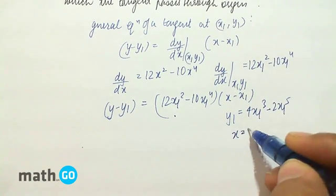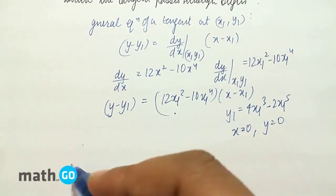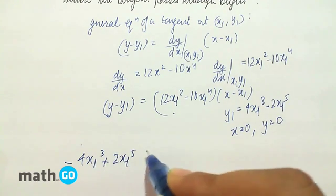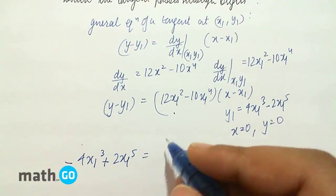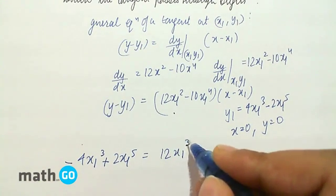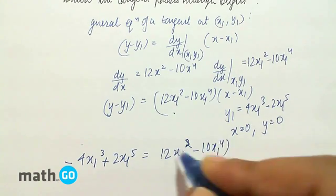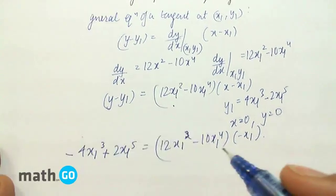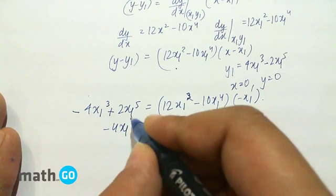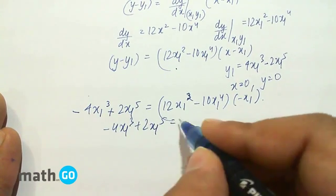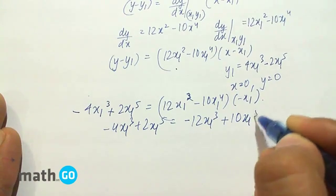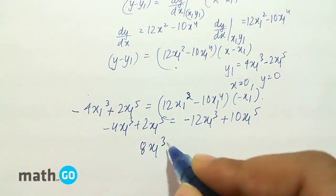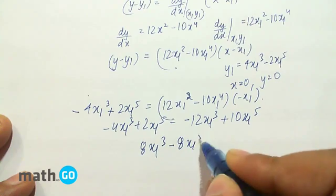Keeping x equals 0 and y equals 0, we get minus 4x1 cubed plus 2x1 to the power 5 equals the derivative term into minus x1. On simplifying, 2x1 to the power 5 equals minus 12x1 cubed plus 10x1 to the power 5, which gives us 8x1 cubed minus 8x1 to the power 5 equals 0.